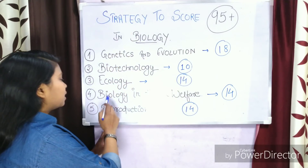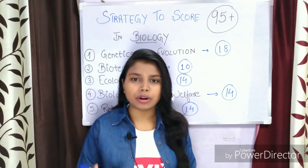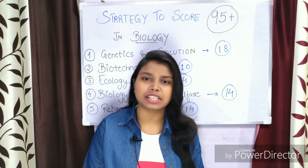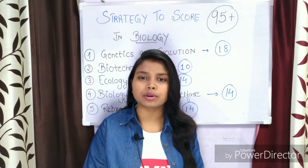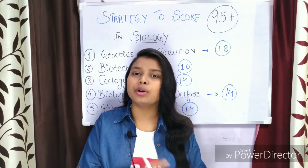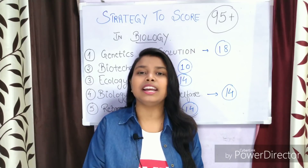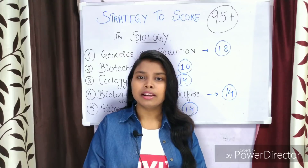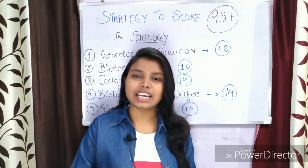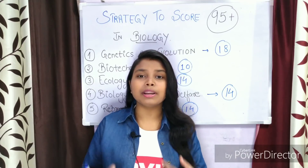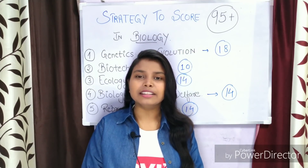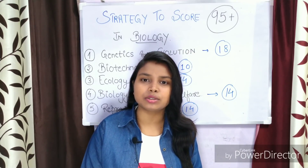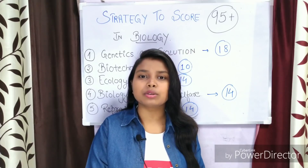Next is biology and human welfare, which is the smallest and easiest unit. In this unit you will relate to microbes that are helpful in human welfare. You will also need to know about diseases such as cancer and AIDS — all the viral and bacterial diseases and related topics. Keep all these topics in mind.